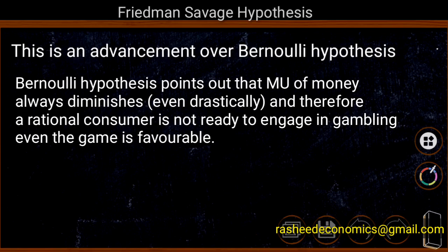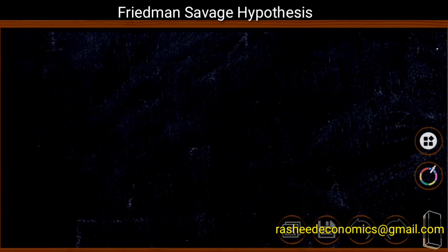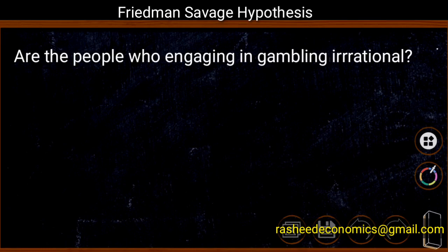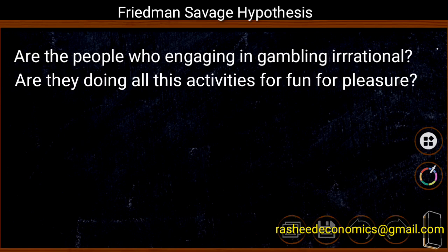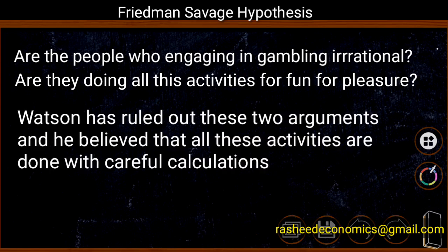But in the real world, people will enter into gambling or make bets even under very unfavorable conditions. There are people who are engaging in gambling and accepting risk. This leads to certain questions: whether these people are irrational, or whether they are doing all these activities just for pleasure or fun. The economist Watson has ruled out these two options. According to Watson, gambling is done normally with careful calculations.